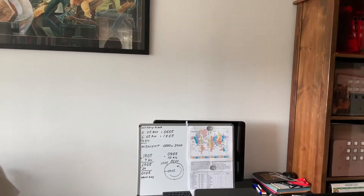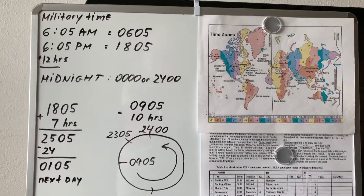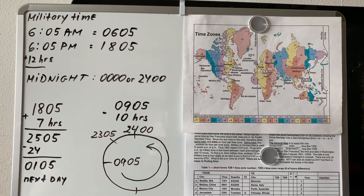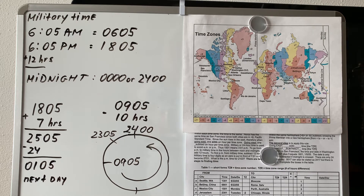Let me show you now the map and the rules on how to calculate time. Here I prepared for you something — this map shows you the time zones. You have this map in your book and in my PowerPoint presentations. There are two major rules we have to follow to calculate the time somewhere else.